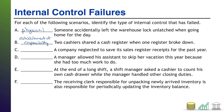That brings us to C. A company neglected to save its sales register receipts for the past year. That is a failure in documentation controls. Documentation controls provide records that can help verify transactions.